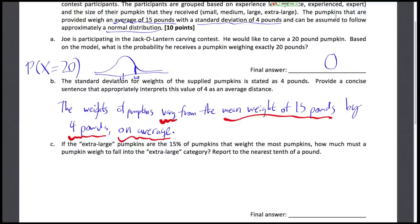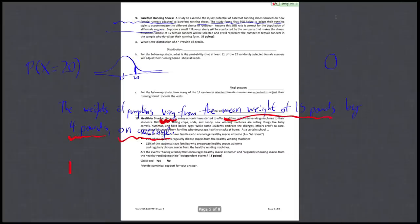All right. So in part C, if the extra large pumpkins are the 15% of pumpkins that weigh the most, the extra large pumpkins are the top 15% here. So how much must a pumpkin weigh to fall into this extra large category? And we want to report to the nearest 10th of a pound. So essentially here, we want to find what weight puts us into that 15th percentile. Another way of looking at this is you want the...